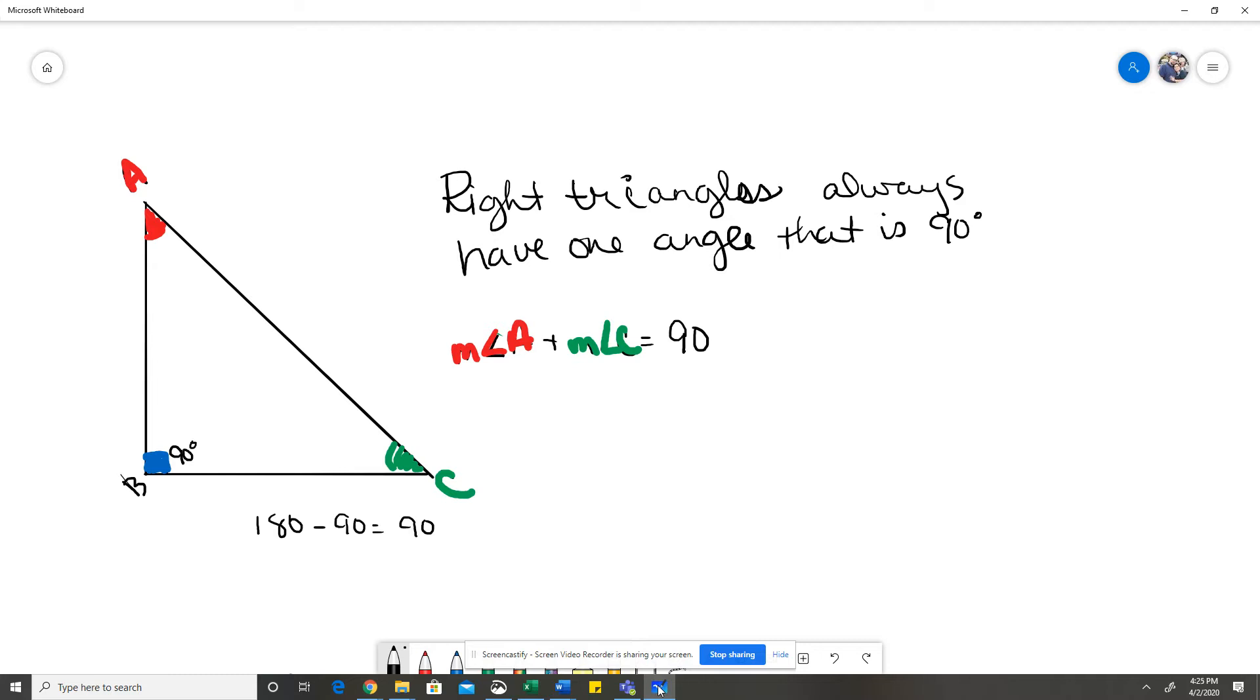That right angle is always going to be 90 degrees. A and C will each be less than 90 degrees, but A and C will add up to 90 degrees because if we take out that one 90 degree angle from the 180, we're left with 90 degrees. So if we take the two unknown angles and add them up, we end up with 90 degrees.